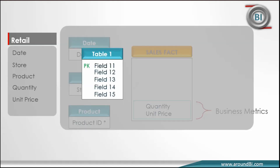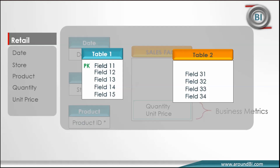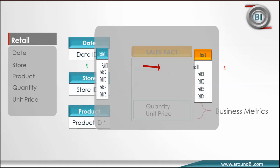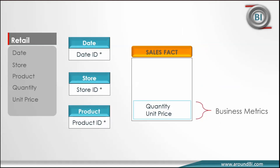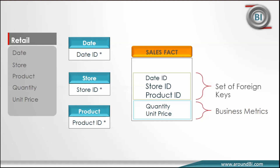For joining two tables, we need a common data set available in both tables. Generally, we take the primary key field from one table and insert it into the other table, where it becomes a foreign key. This foreign key creates a relationship between the two tables. Clearly, if the fact table is associated with three different dimension tables, we need three different sets of foreign keys in the fact table. We will add date ID, store ID, and product ID as foreign keys in the sales fact table and associate dimension tables with these keys.